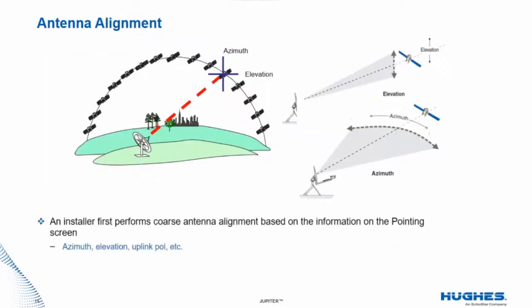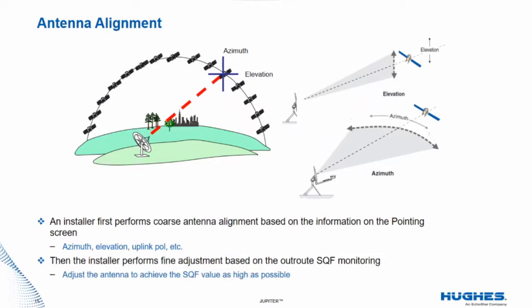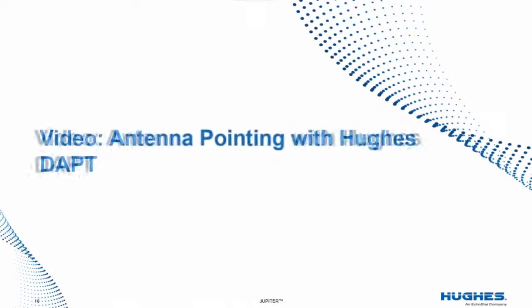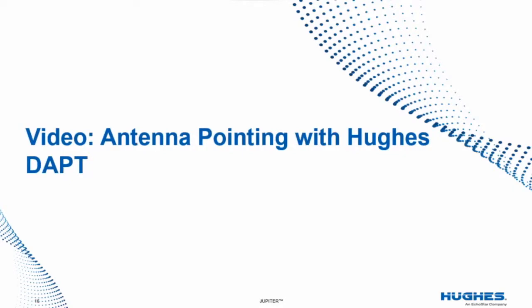An installer will first perform coarse antenna alignment based on the information on the pointing screen — azimuth, elevation, and polarization. Then the installer performs fine adjustment based on the outroute SQF monitoring. The installer needs to adjust the antenna to achieve the SQF value as high as possible. Here is a video clip showing how an installer performs antenna pointing with the Hughes antenna pointing tool.